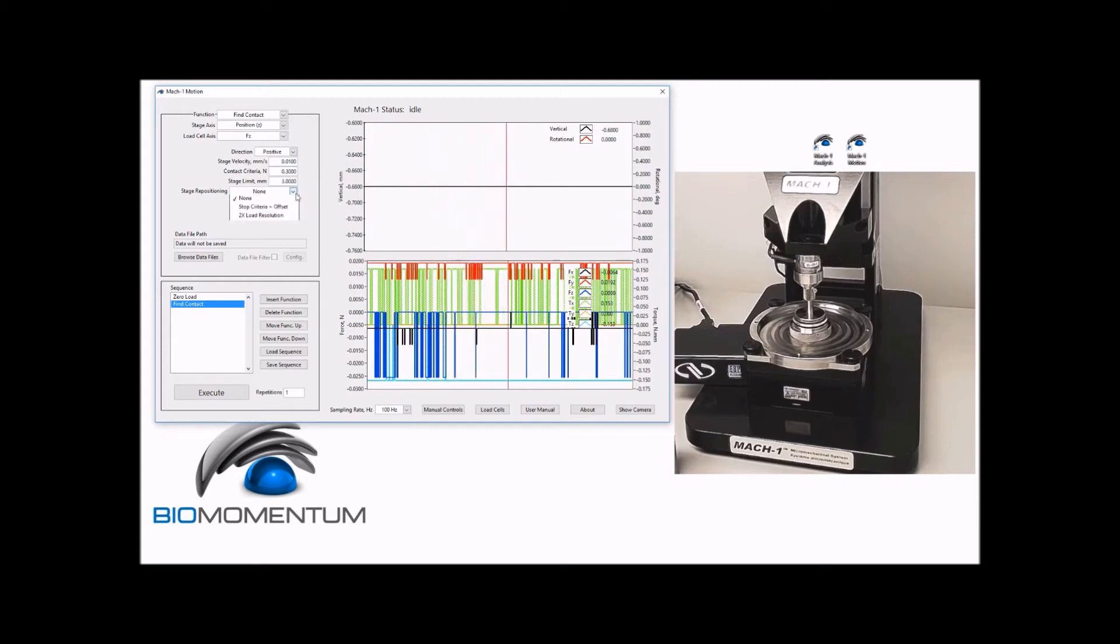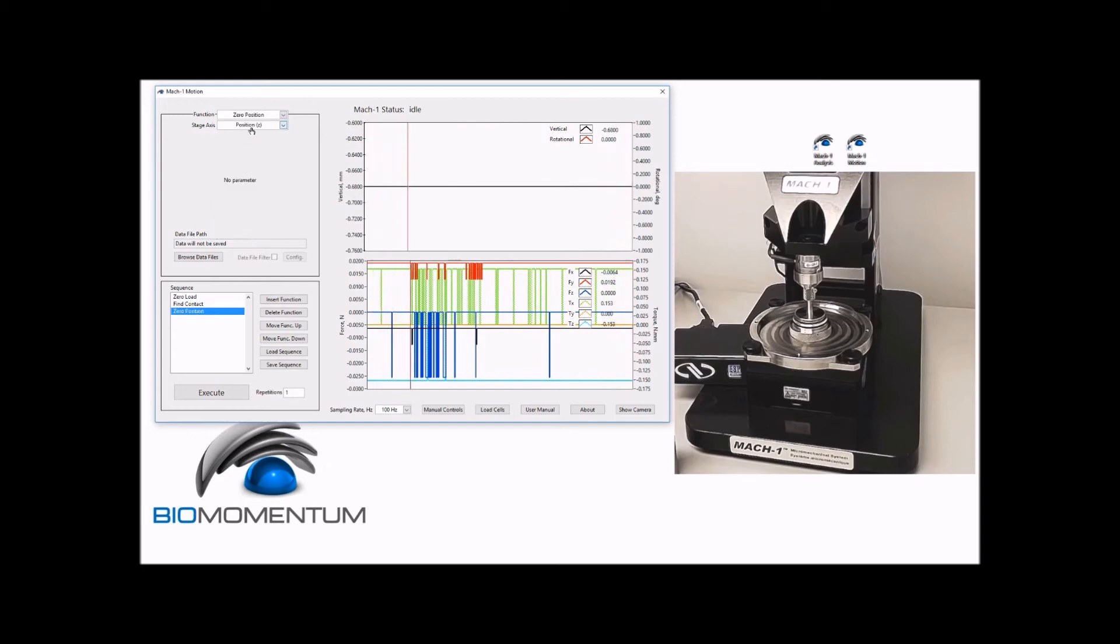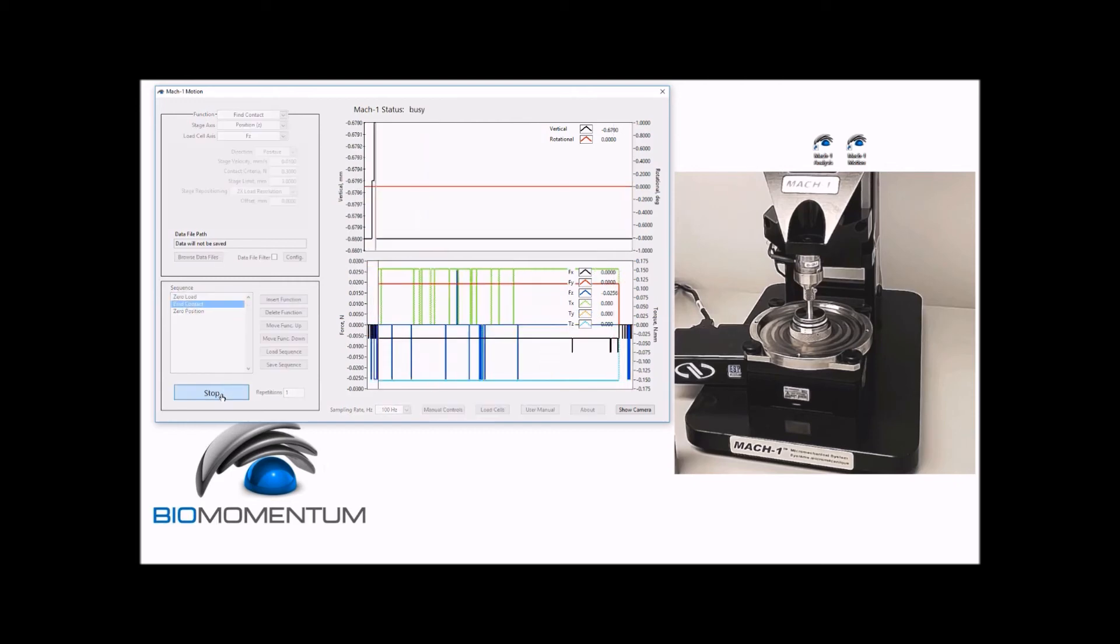and a stage repositioning of 2 times the load cell resolution. Then we will insert a zero position function with the position z as a stage axis parameter. Now execute the sequence.